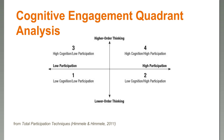In quadrant one, we have low cognition and low participation. Quadrant two is low cognition, high participation. Quadrant three is high cognition, low participation. And our ultimate goal is quadrant four: high cognition and high participation.